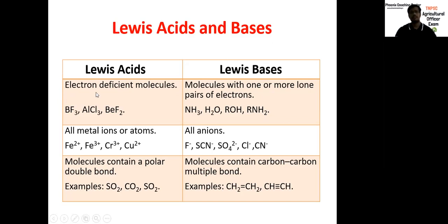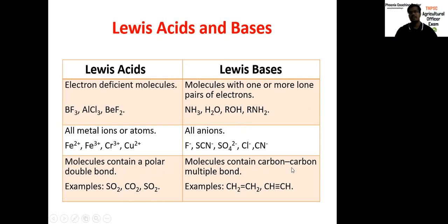All metal ions are Lewis acids. All the negative charge ions (anions) are Lewis bases. All positive ions (cations) are Lewis acids. Molecules containing a polar double bond — SO2, CO2, SO3 — are Lewis acids. Lewis bases include molecules containing carbon-carbon multiple bonds — for example, CH2=CH2 (ethylene) and acetylene with a triple bond.